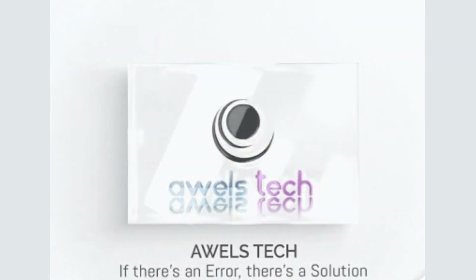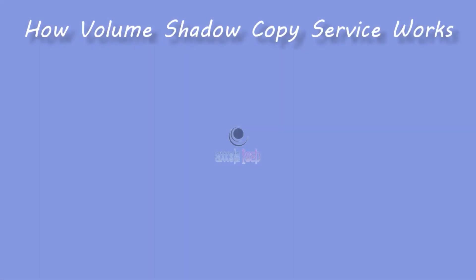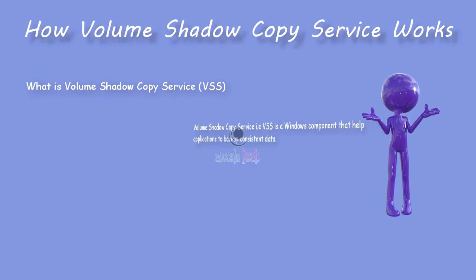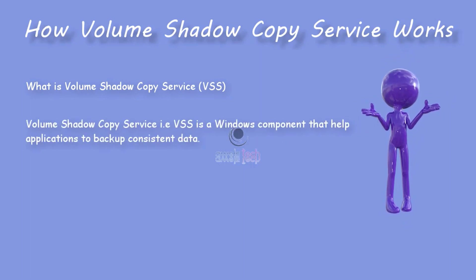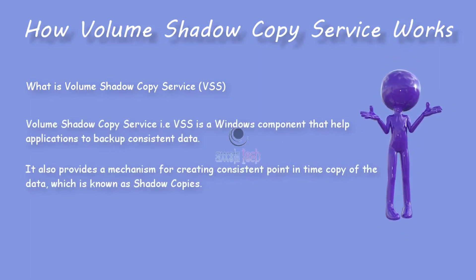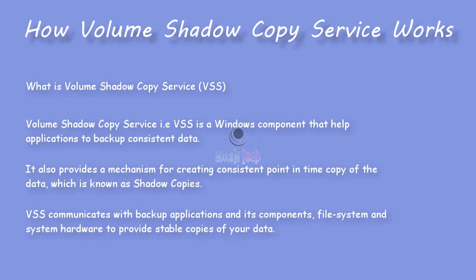Welcome back. In today's video we are going to see how the Volume Shadow Copy Service works. But before we know how it works, we should know what VSS is. VSS is a Windows component that helps applications have a consistent backup. It also provides a mechanism for creating consistent point-in-time copies of data, known as shadow copies, and communicates with backup applications, the file system, and system hardware to provide a stable copy of your data.